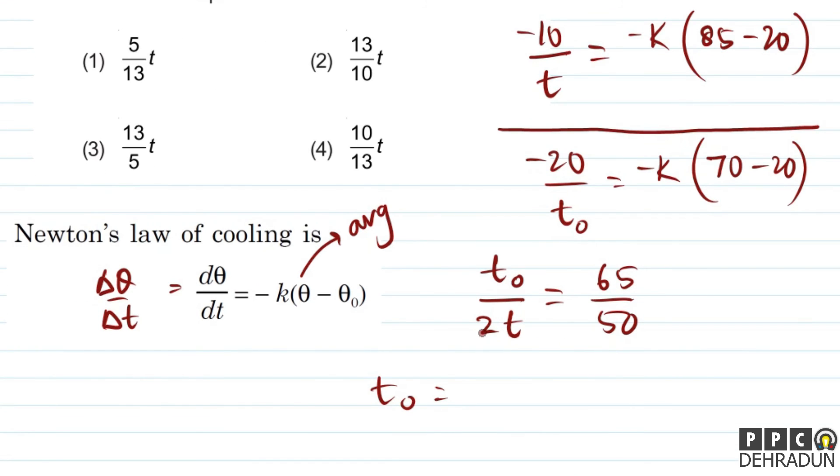t₀ upon 2t is 65 upon 50. Simplifying: 2 times 25 is 50, and 5 times 13 is 65. So t₀ is 13t upon 5. The answer to this question is 13t upon 5, which is option number 3. Take care, thank you.